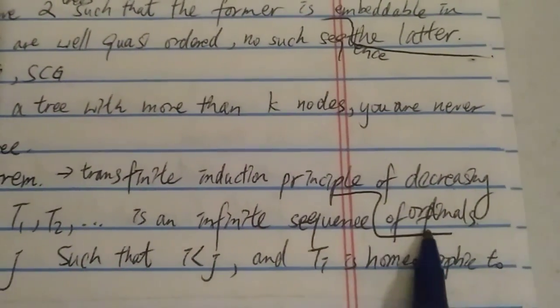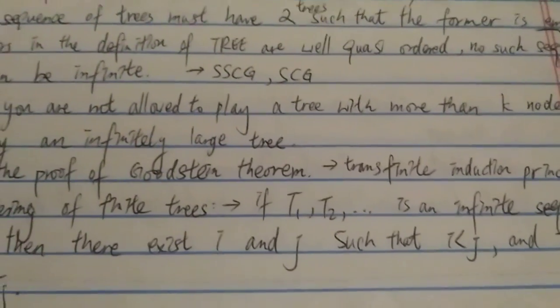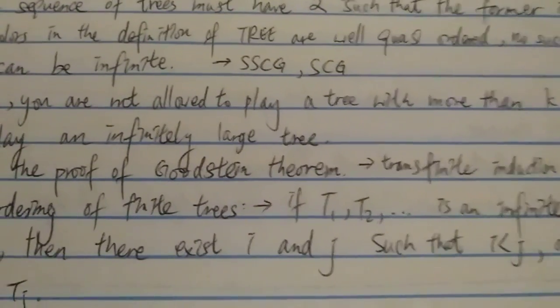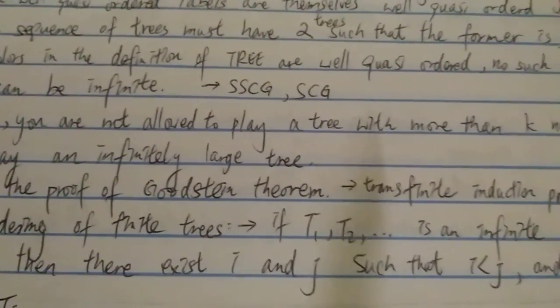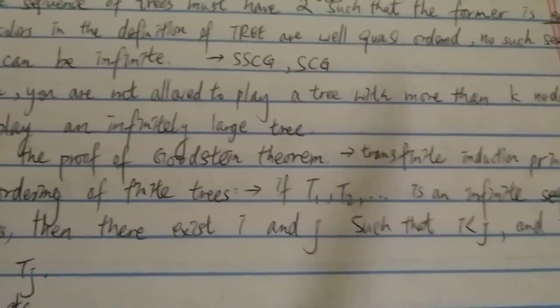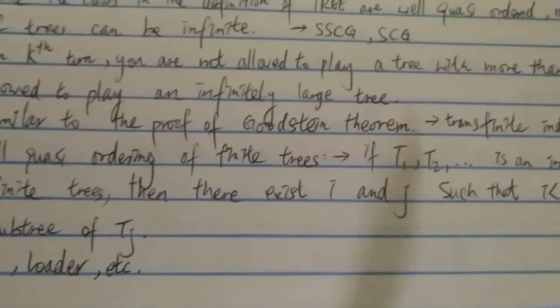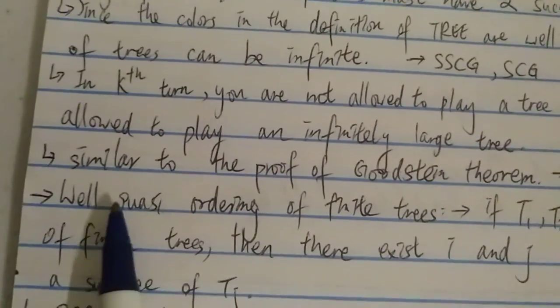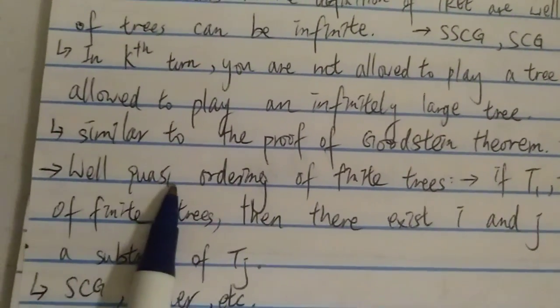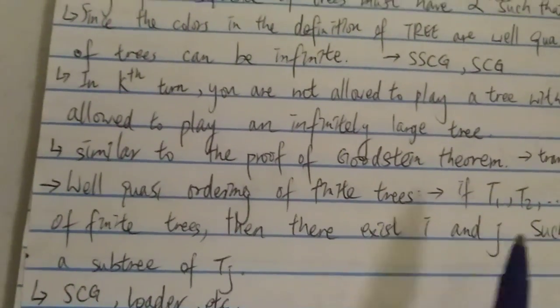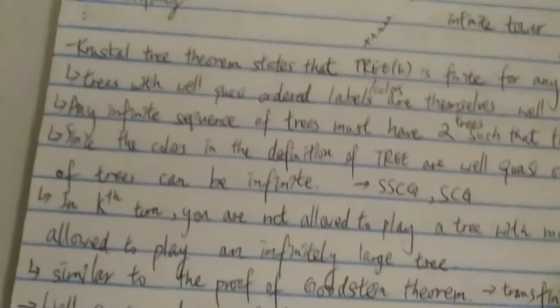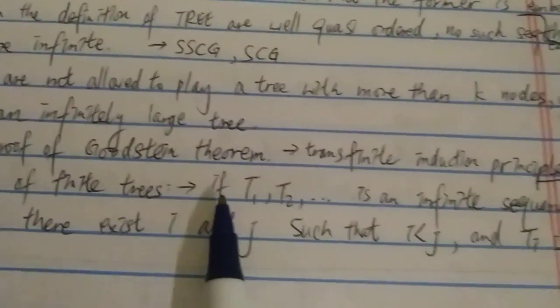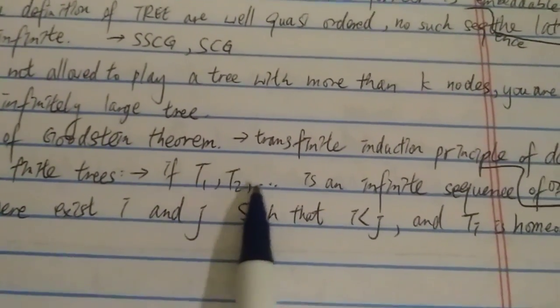However, you can use transfinite ordinals to prove not just TREE(3) but every TREE(k). The proof is actually similar to the proof for the Goodstein sequence, using transfinite induction on increasing ordinals. There are good videos and articles about the Goodstein theorem — the TREE theorem proof is similar in principle. The same approach has been used to prove the SCG function is finite as well, and SCG grows even faster than TREE.